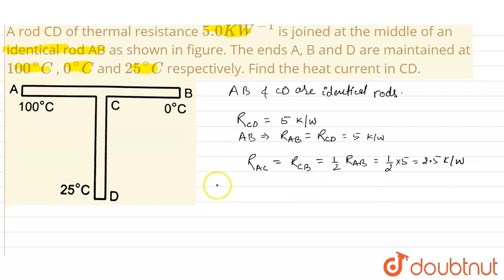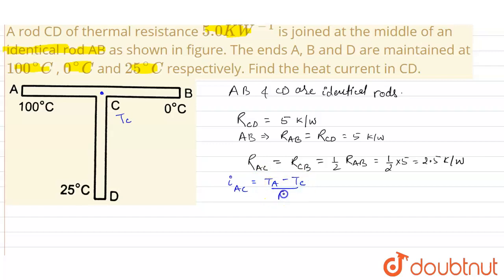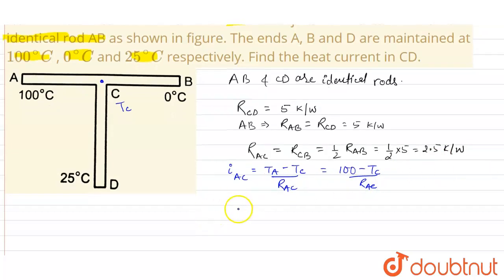Now let's calculate the heat current in rod AC. Suppose the temperature at point C — the junction — is Tc. The heat current in rod AC is given as: temperature at A minus temperature at C, divided by the resistance of rod AC. Temperature at A is 100°C, so the heat current in AC equals (100 − Tc) / 2.5.